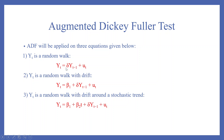Now let's understand the Augmented Dickey-Fuller test. The ADF will be applied on three equations. First, Yt is a random walk: Yt equals delta times Yt minus 1 plus Ut. Second, Yt is a random walk with drift: Yt equals beta1 plus delta times Yt minus 1 plus Ut.